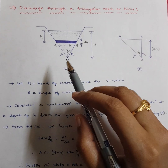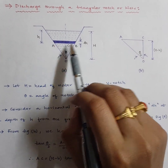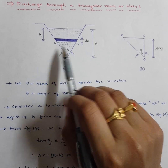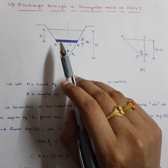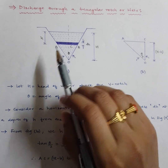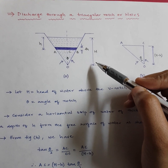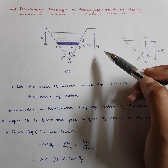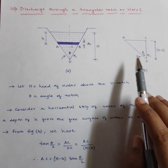Coming back to the diagram, point O is the apex point. We consider an elementary strip of thickness dH, which is at a distance of small h from the water surface. The total height of the water surface from the apex point is capital H.